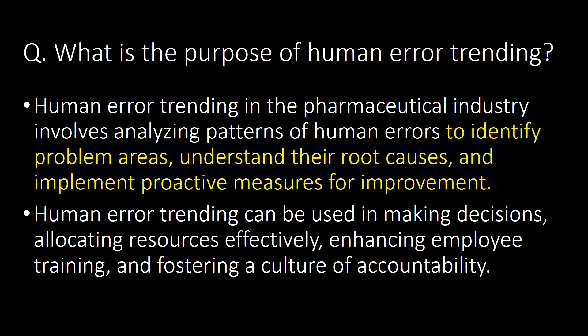What is the purpose of human error trending? Human error trending in the pharmaceutical industry involves analyzing patterns of human errors to identify problem areas, understand their root causes, and implement proactive measures for improvement. Human error trending can be used in making decisions, allocating resources effectively, enhancing employee training, and fostering a culture of accountability.